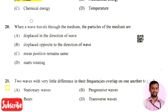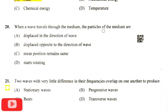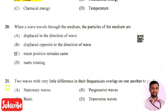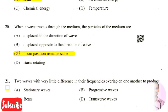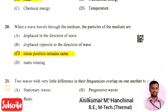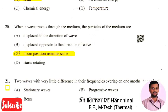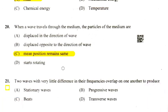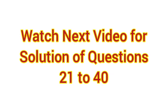The next question: when a wave travels through a medium, the particles of the medium — the right answer is option 3. When a wave travels through a medium, the mean position of the particles remains the same; the particles oscillate about their mean position.